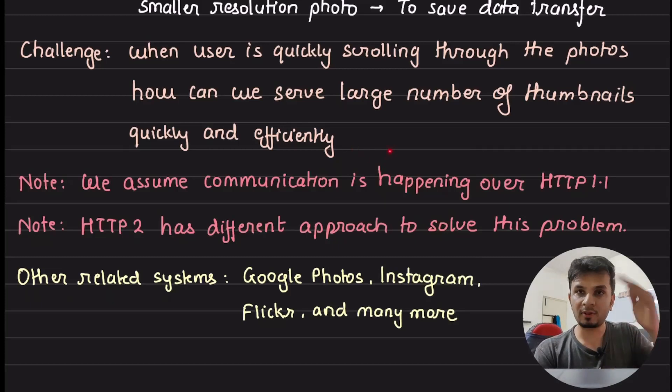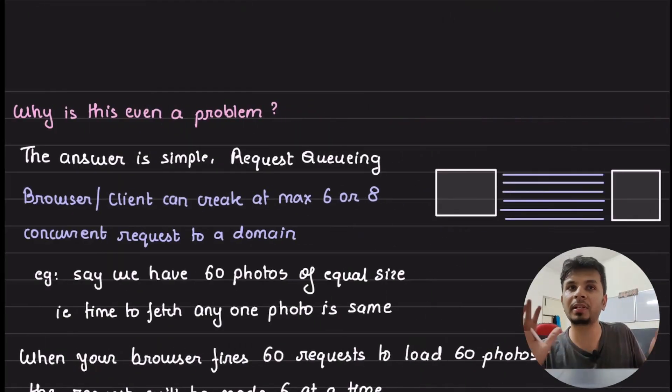And other systems apart from Dropbox, what we can build through this is Google Photos, Instagram, and Flickr. Wherever you see a lot of photos or videos that you need to scroll, you can leverage this particular system out there or this particular hack out there. Before we do that, why is this even a problem?